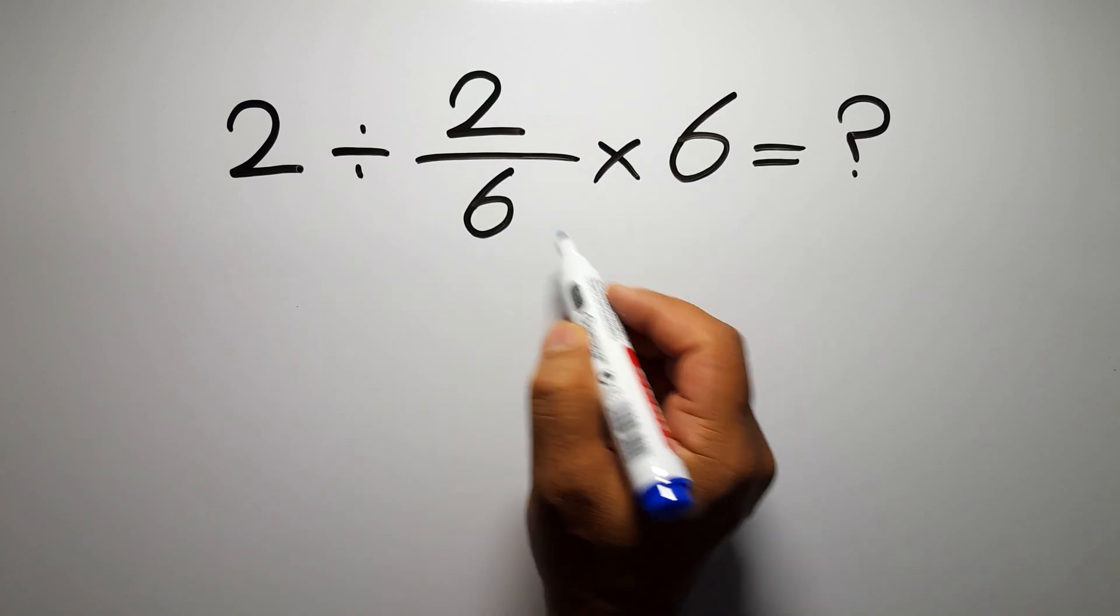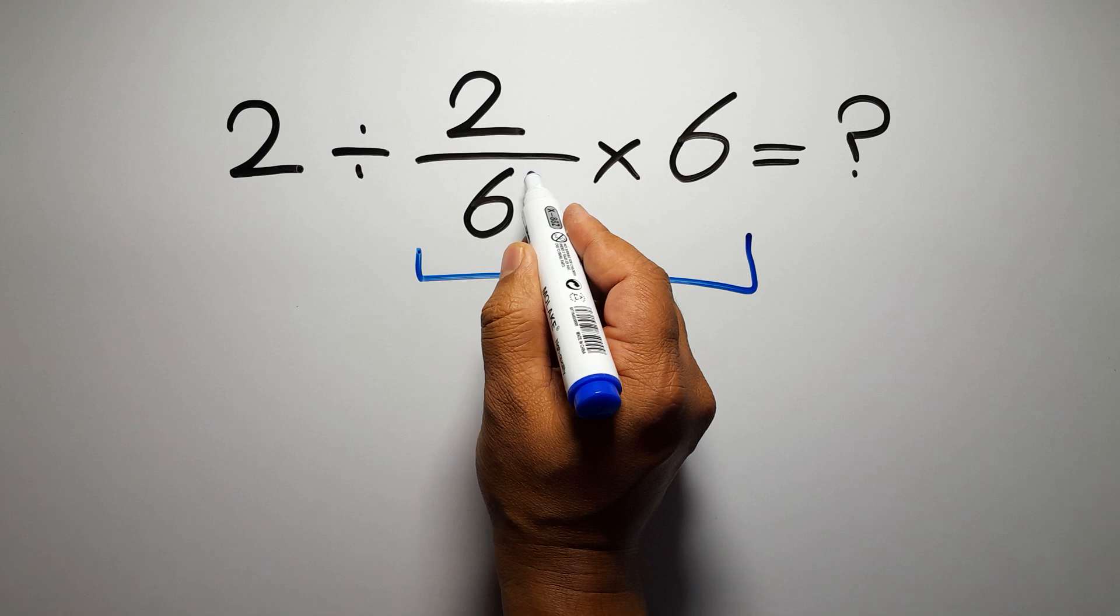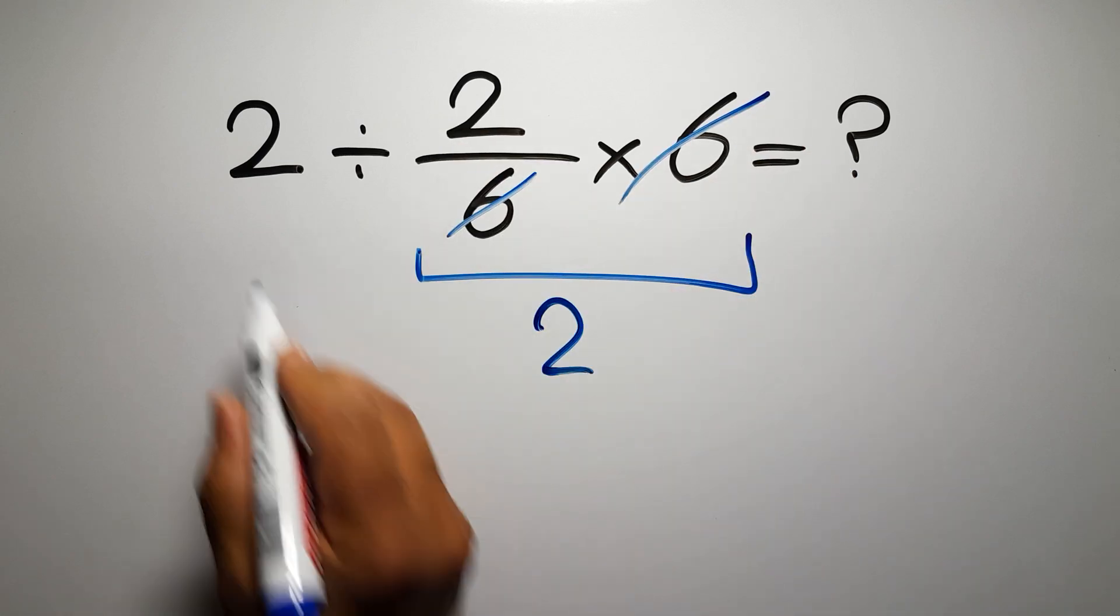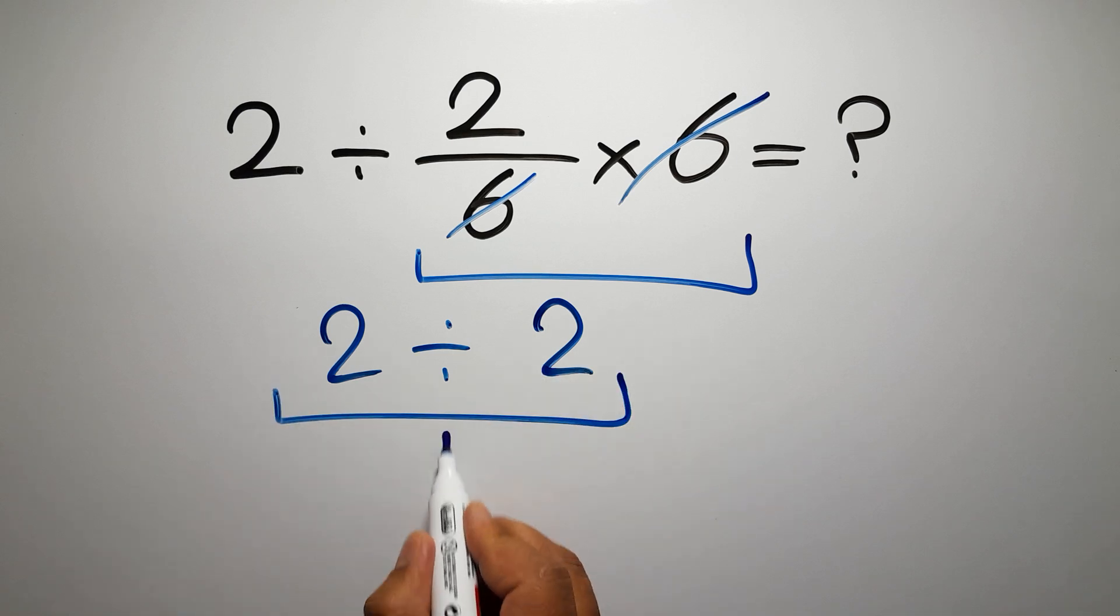First, we do this multiplication. 2 over 6 times 6. We can easily cancel this 6 and this 6, so we have just 2. And 2 divided by this 2 gives us 1.